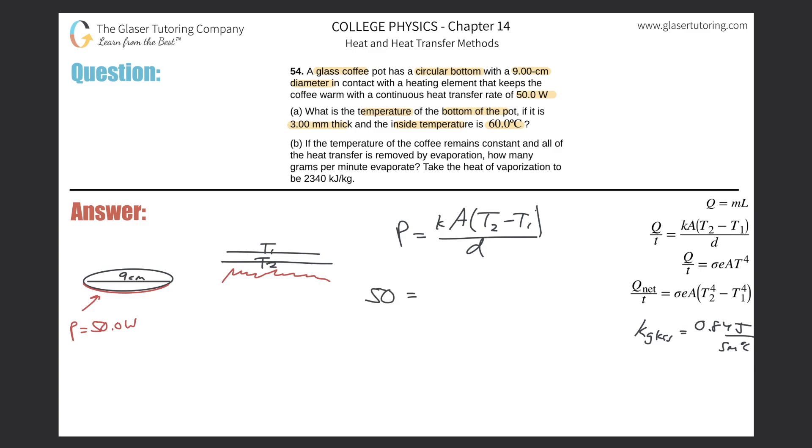So why don't we just start plugging in the numbers? So this is basically 50. The constant for glass that's looked up is 0.84. The area, they told us the circular diameter. We know we need the area with the radius, so it's pi times the radius squared. What's the radius if the diameter is 9? Well it's 4.5. But that's 4.5 centimeters. I got to convert that into meters, so you got to divide that by 100. That whole thing is squared.